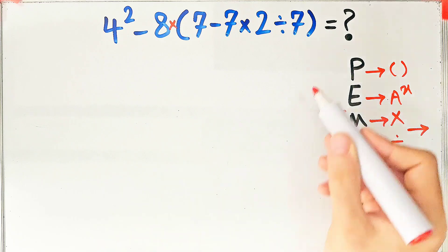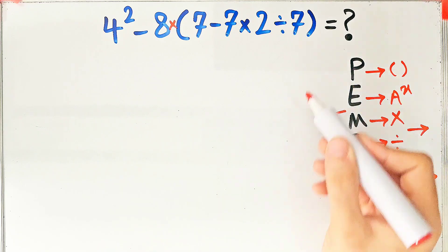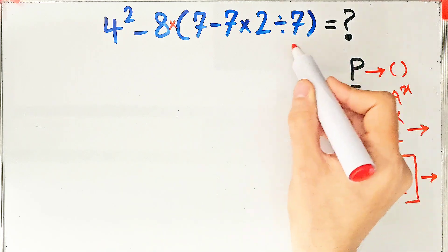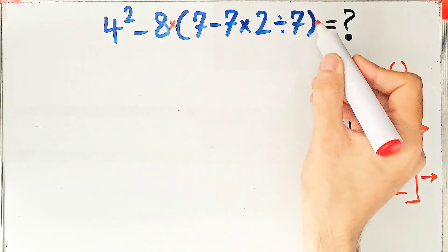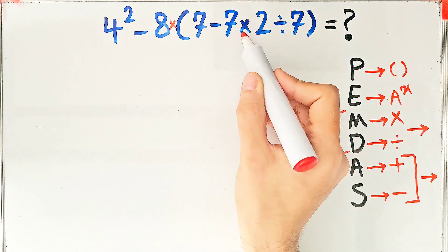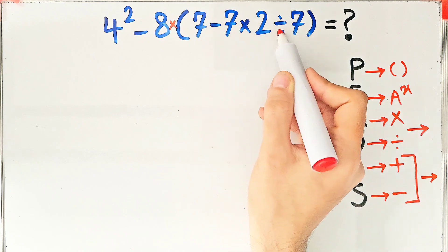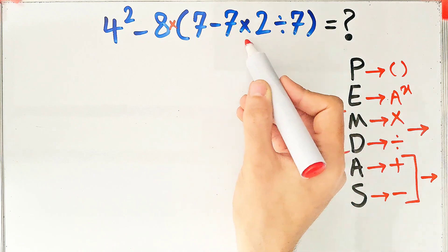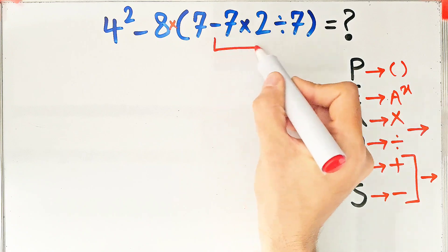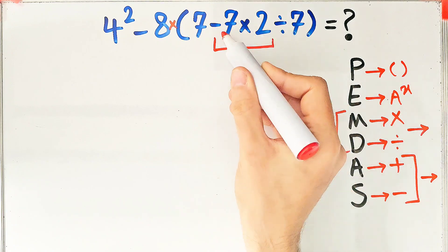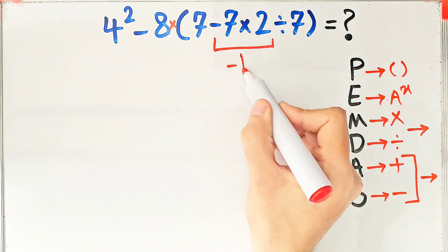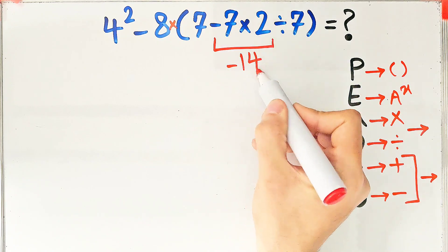First we simplify the parenthesis. Inside the parenthesis we have subtraction, multiplication, and division. According to the PEMDAS rule, first we simplify the multiplication: negative seven times two equals negative 14.